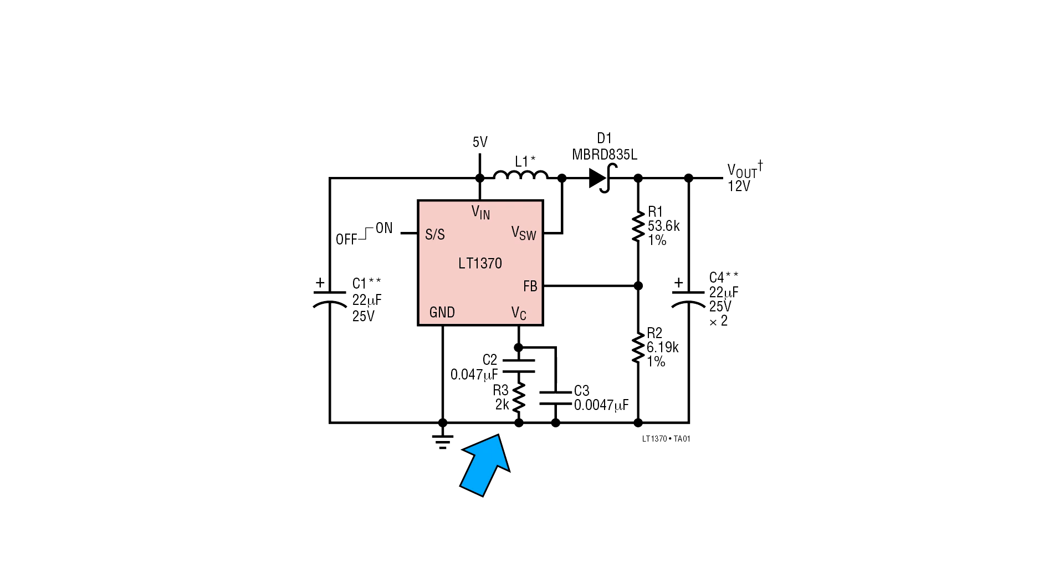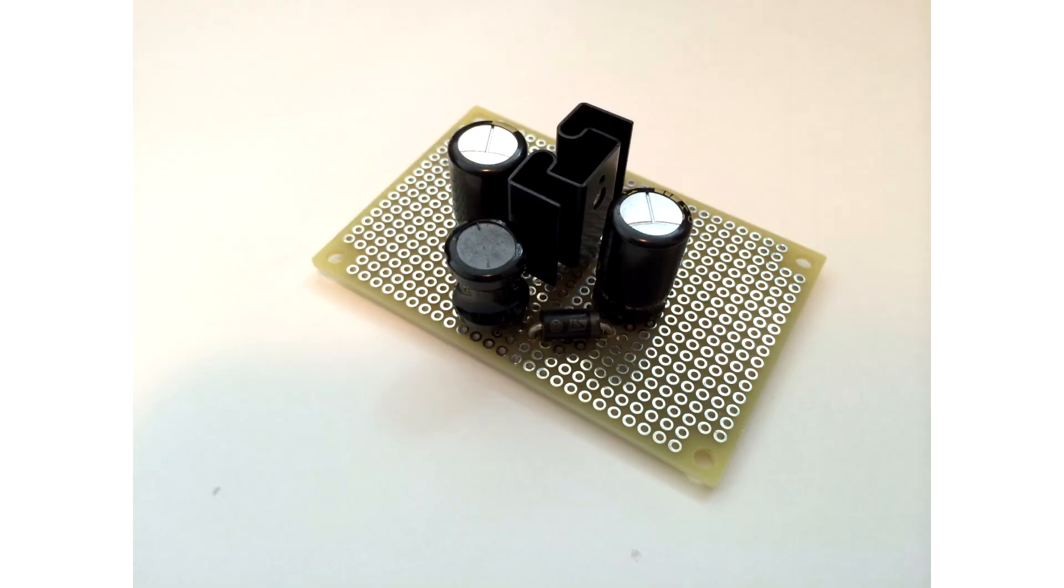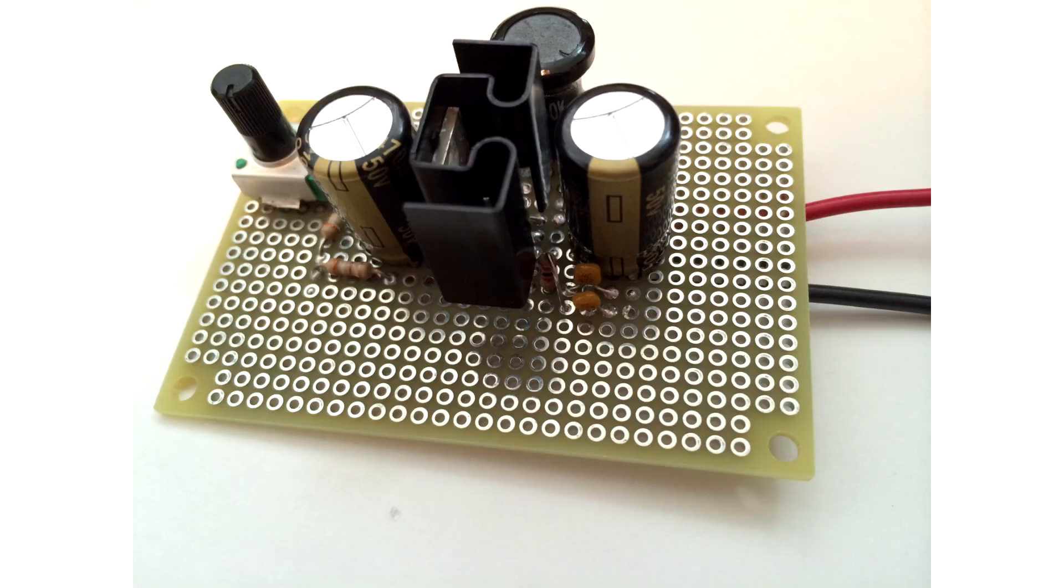Alright, let's build this thing. Start by soldering the heatsinked controller chip onto some perfboard or make your own PCB. Leave plenty of space for the other components. Keep component leads short and your solder traces thick. Add the inductor, the diode and the capacitors. Next, add the feedback resistors, keeping things as short as possible. Finally, solder the frequency compensation components near the input and leave pins 3 and 6 unconnected.